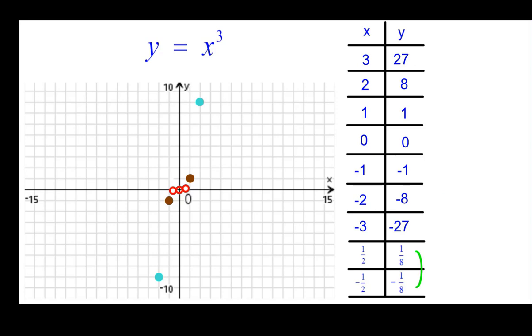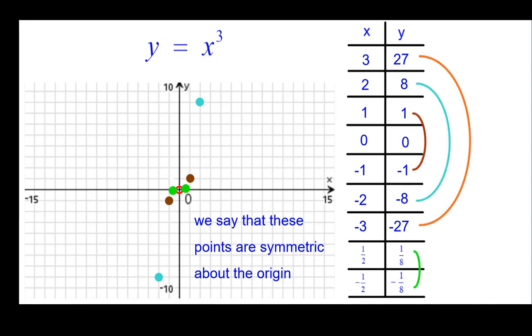And then the half and negative 1 half. Look at those two points. And these two, we say that these points are symmetric about the origin. That's the phrase we're going to use, symmetric, symmetry about the origin. And even the large ones would have that. 3, 27 and negative 3, negative 27 would have that.